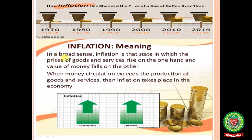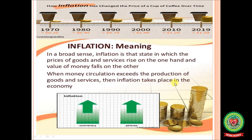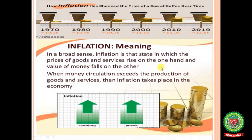In a broad sense, inflation is that state in which the prices of goods and services rise on one hand and the value of money falls on the other, when money circulation exceeds the production of goods and services. For example, you can see the prices of gold — there has been an inflationary rise in gold prices since 1991. Similarly, prices of petroleum and LPG cylinders have continuously increased, showing an inflationary rise in the prices of these commodities.